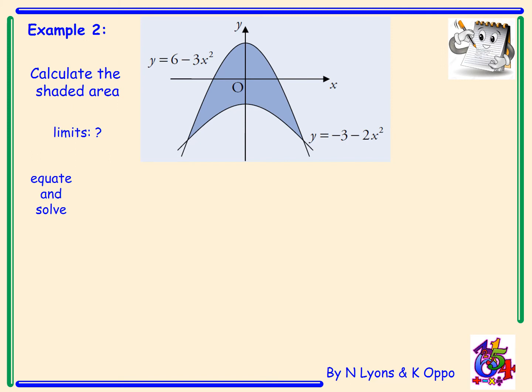So the limits are going to be the points of intersection of these two curves. Now to find that, I'm going to have to equate and solve. So I've got 6 minus 3x squared equals minus 3 minus 2x squared. Bring everything over and it equals 0.